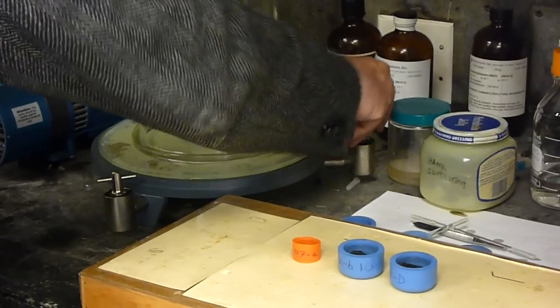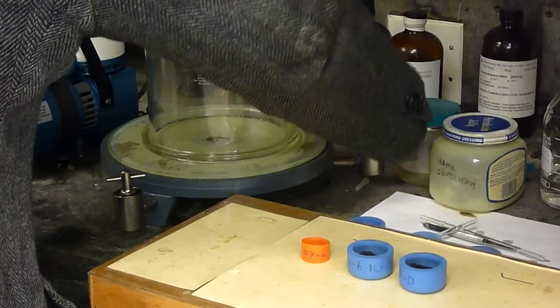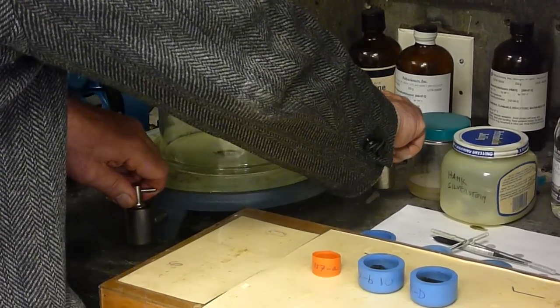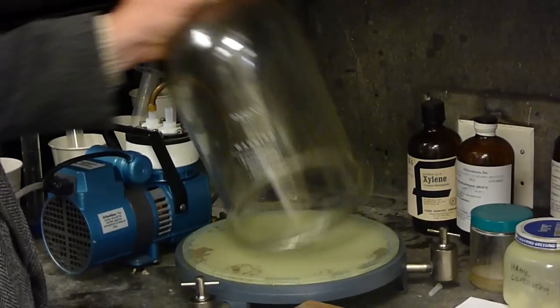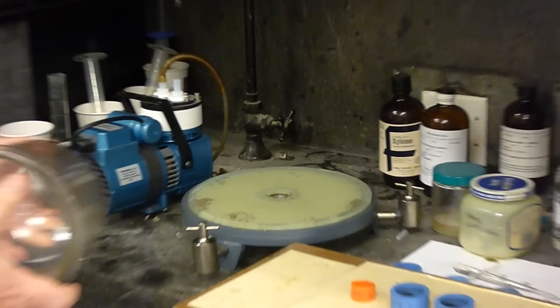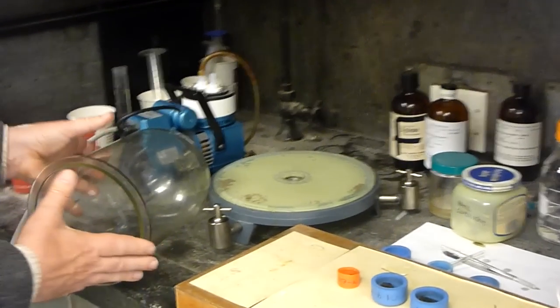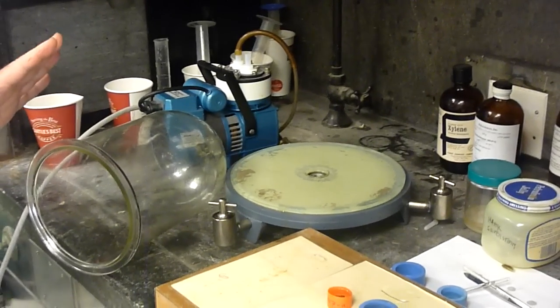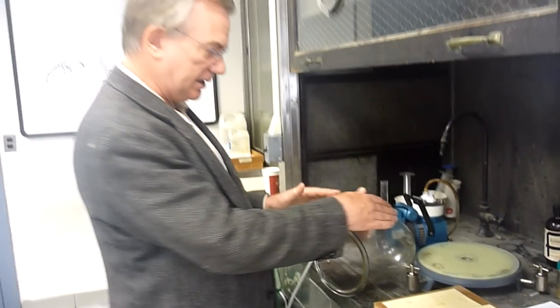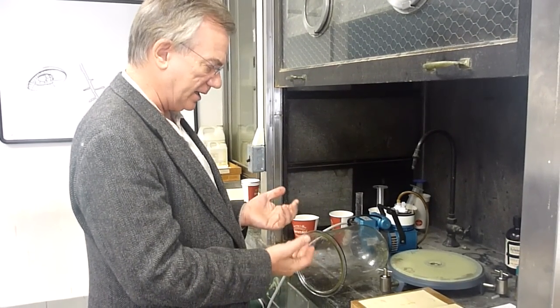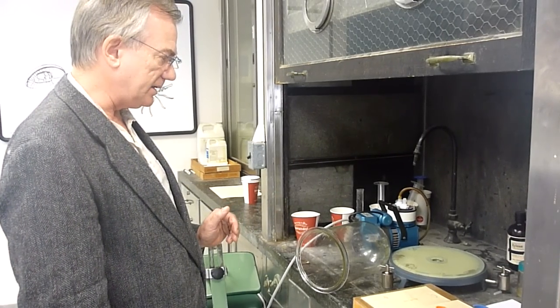...in order to not allow air to escape during the vacuum embedding. And they're pretty tight now. I'm going to take this bell jar off. And what I'm going to do is create a seal so that when we put these pieces in here and cover them with a bell jar, there will be no air entering the chamber.